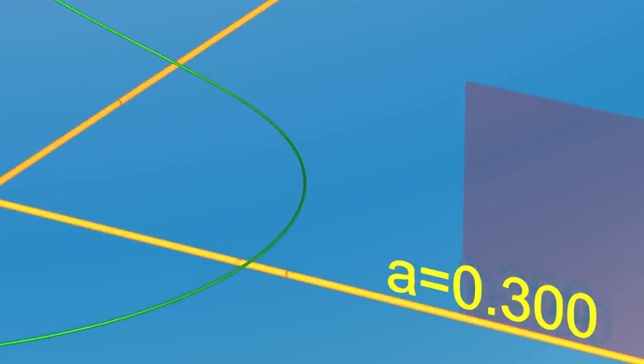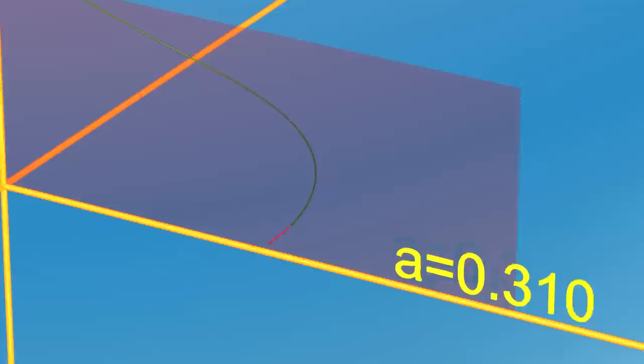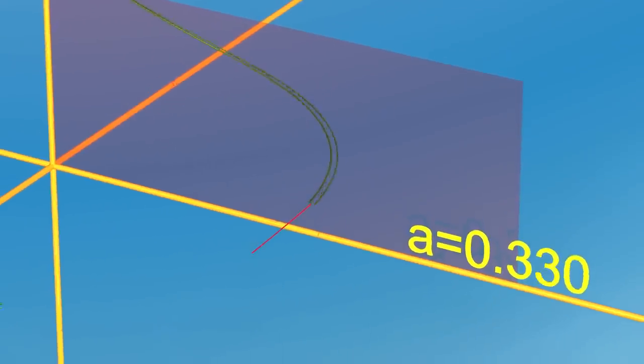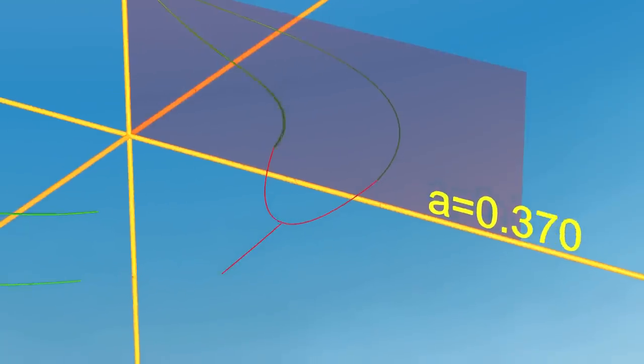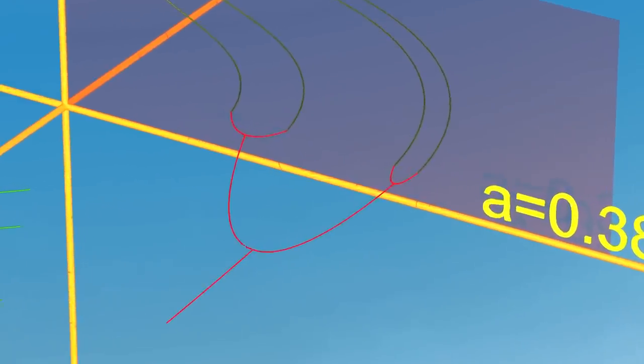For each value of A, we can record how the attractor meets a plane. We draw the intersection in red. As the parameter A varies, we obtain a picture that looks like a piece of lace. This is called a bifurcation diagram.